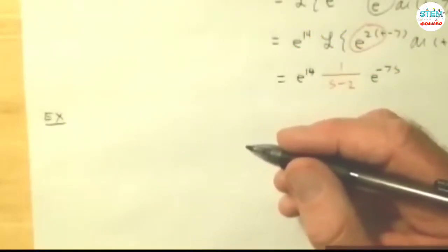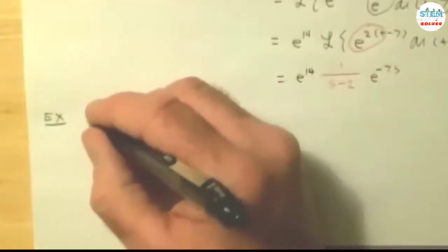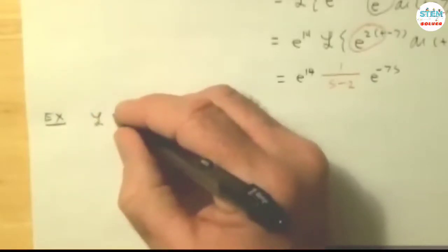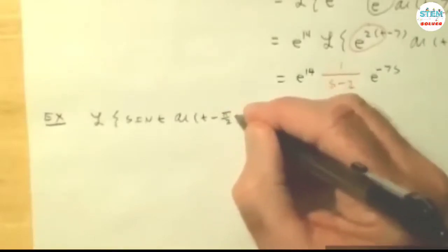So let's say that we were to look at the Laplace transform. It doesn't say u of t minus pi over 2.